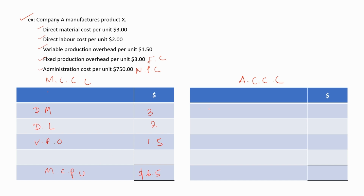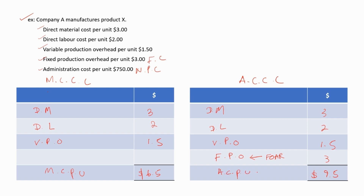Now let's calculate the absorption costing per unit. We consider direct material cost per unit, direct labor cost per unit, variable production overhead per unit, and the fixed production overhead per unit — calculated using the FOAR (fixed production overhead absorption rate). So the absorption costing for product X is 3 + 2 + 1.5 + 3 = $9.5.